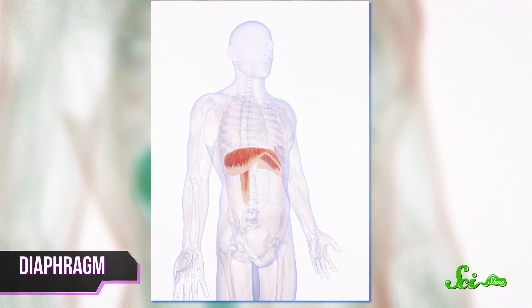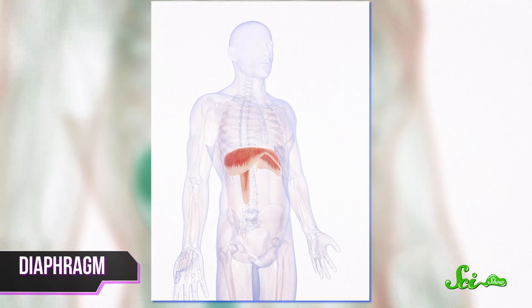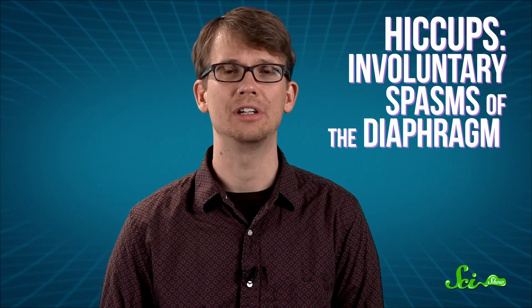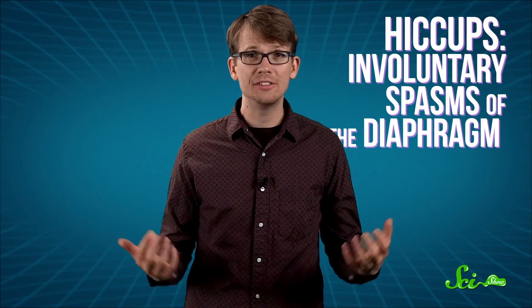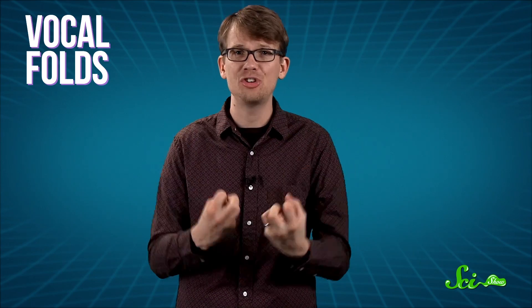you gotta start with getting to know your diaphragm. The diaphragm is a sheet of muscle under your lungs that is one of the most important muscles you have if you enjoy things like breathing. And a hiccup is just an involuntary spasm of the diaphragm that causes it to contract suddenly. When that happens, you take in a gulp of air really quickly until your vocal folds, the membranes at the top of your throat, clamp shut.